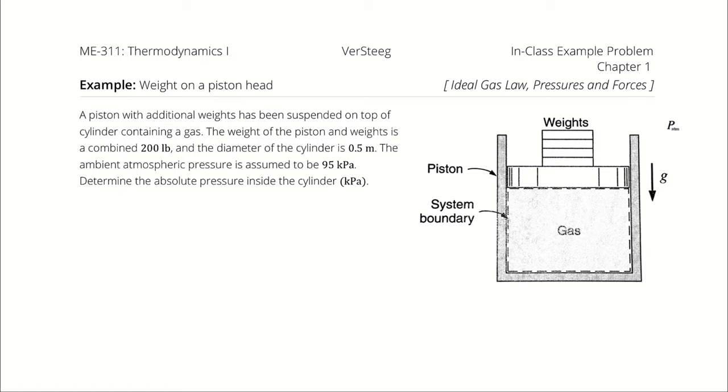The ambient atmospheric pressure is assumed to be 95 kPa. Determine the absolute pressure inside the cylinder.